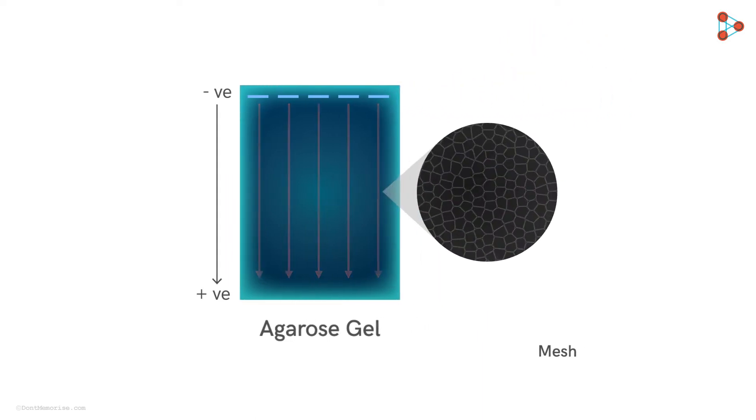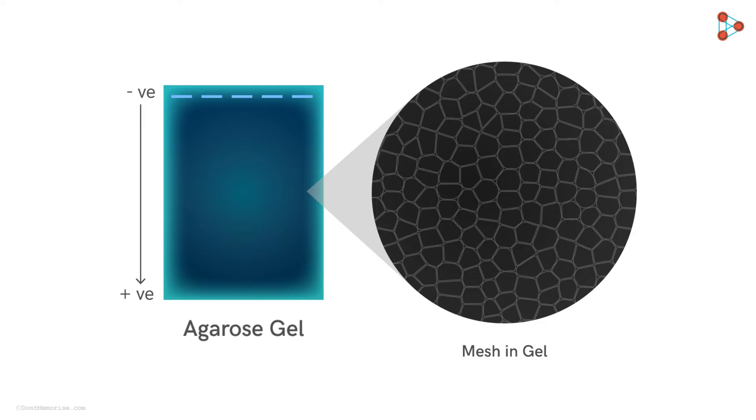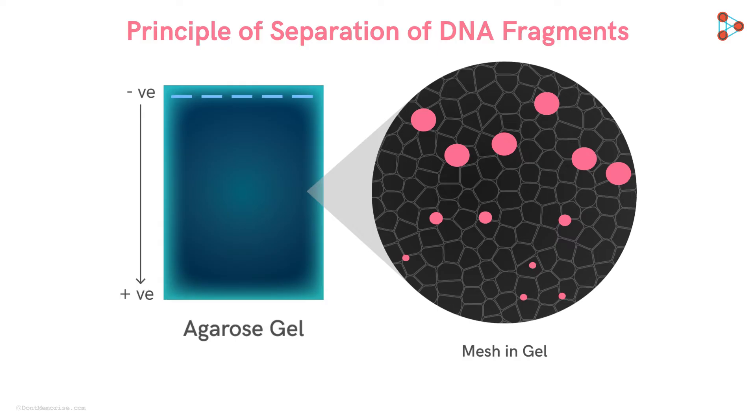To understand this better, let's zoom into the gel that is prepared for the experiment. Here, at the microscopic level, we find that the gel appears to be a mesh-like structure, and the pore size is nearly constant throughout. So now imagine what will happen if different sized DNA fragments are made to pass through these pores. It's obvious that the small sized fragments will escape the pores faster, while the larger fragments will find it difficult to come out. They will take a lot of time to cross the smaller pores, and thus will lag behind. This is how we can understand the principle of separation of the DNA fragments, based on their sizes.